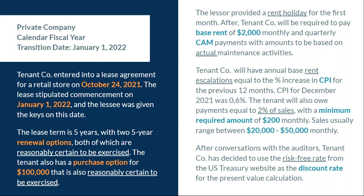The tenant has a purchase option available to them for $100,000 that they are also reasonably certain to exercise. The lessor provides a rent holiday for the first month. After that, Tenetco is going to pay base rent of $2,000 monthly and quarterly CAM payments. There will also be annual base rent escalations equal to the percentage increase in CPI for the previous 12 months. CPI for December 2021 was set as a base amount at 0.6%. The tenant will also owe payments equal to 2% of sales with a minimum required amount of $200 a month. Tenetco has decided to use the risk-free rate for this calculation.